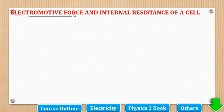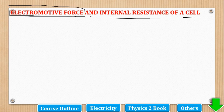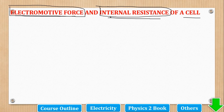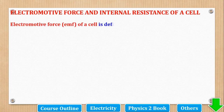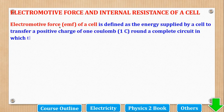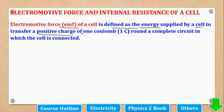Now we have started our topic: electromotive force and internal resistance of a cell. Electromotive force is the full term for EMF. EMF is defined as the energy supplied by a cell to transfer a positive charge of one coulomb round a complete circuit in which the cell is connected. The circuit has to be complete and the charge has to be positive and of one coulomb.